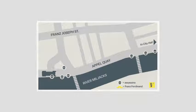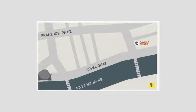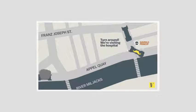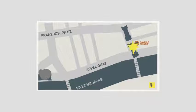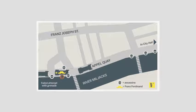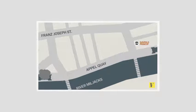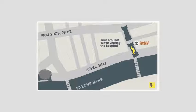There is a video showing the parade route that Franz Ferdinand took and the different assassination attempts by the Black Hand. They failed at first, and then ultimately Gavrilo Princip succeeded in assassinating Franz Ferdinand.